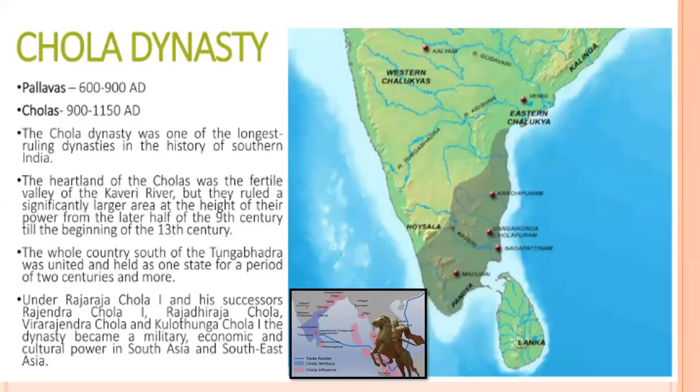The Cholas came to power after the Pallavas in 900 AD. The ascendancy of the Cholas of the Vijayalaya line in the middle of the 9th century was not only a turning point in the political history of South India, but also marked a significant stage in the art history of Tamil Nadu. The Chola dynasty was one of the longest ruling dynasties in the history of South India. The heartland of the Cholas was the fertile valley of the Kaveri river, but they ruled a significantly larger area at the height of their power, from the later half of the 9th century till the beginning of the 13th century. The whole country south of Tungabhadra was united and held as one state for a period of two centuries and more.